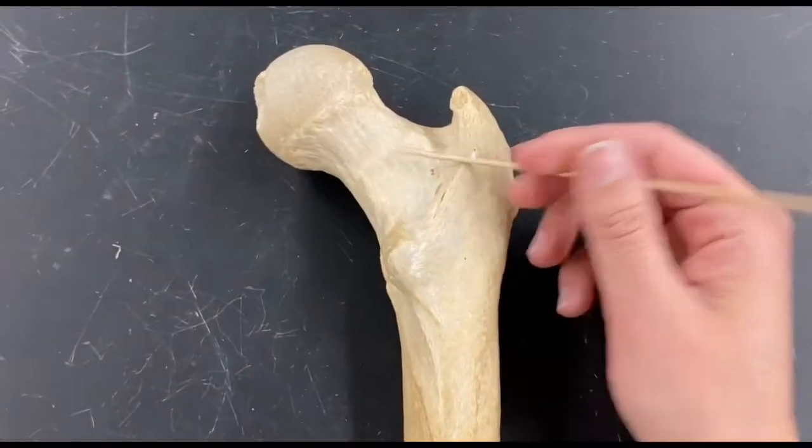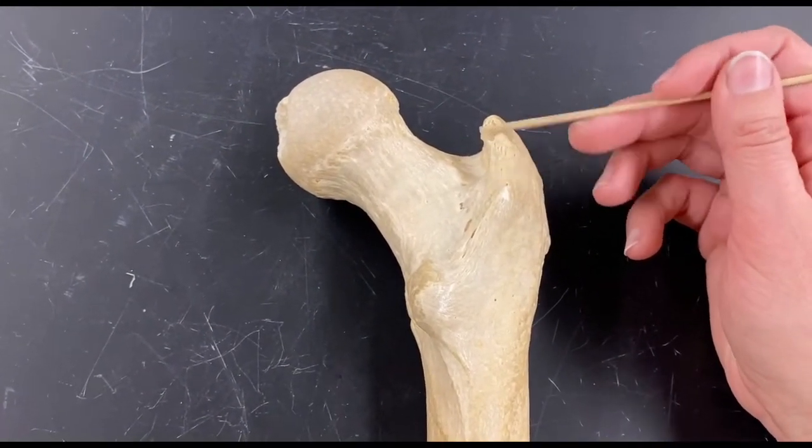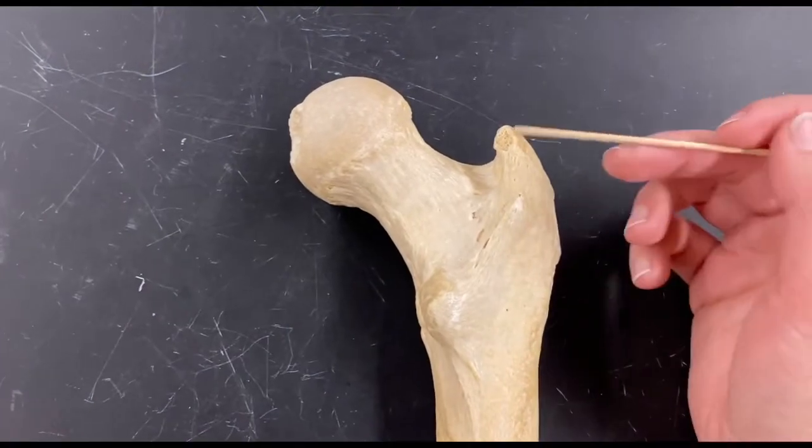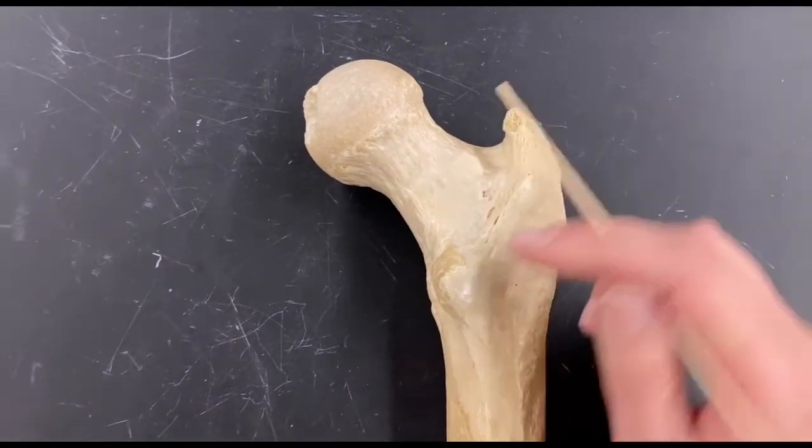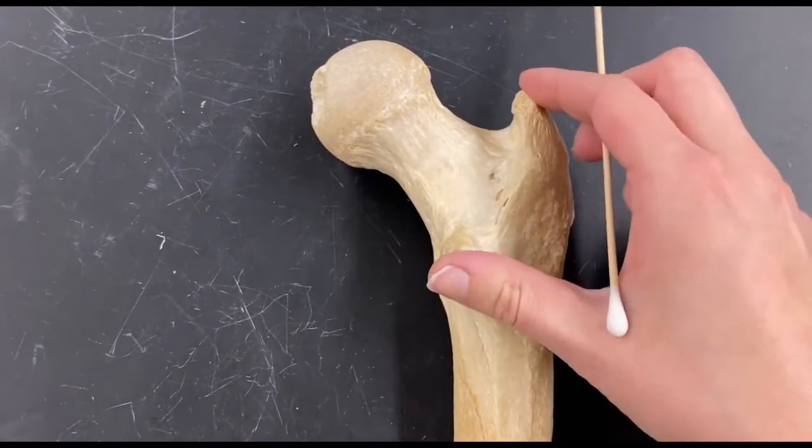And now from the head there's this big kind of horn looking thing, and that is the greater trochanter, and then this smaller similar looking structure is the lesser trochanter.